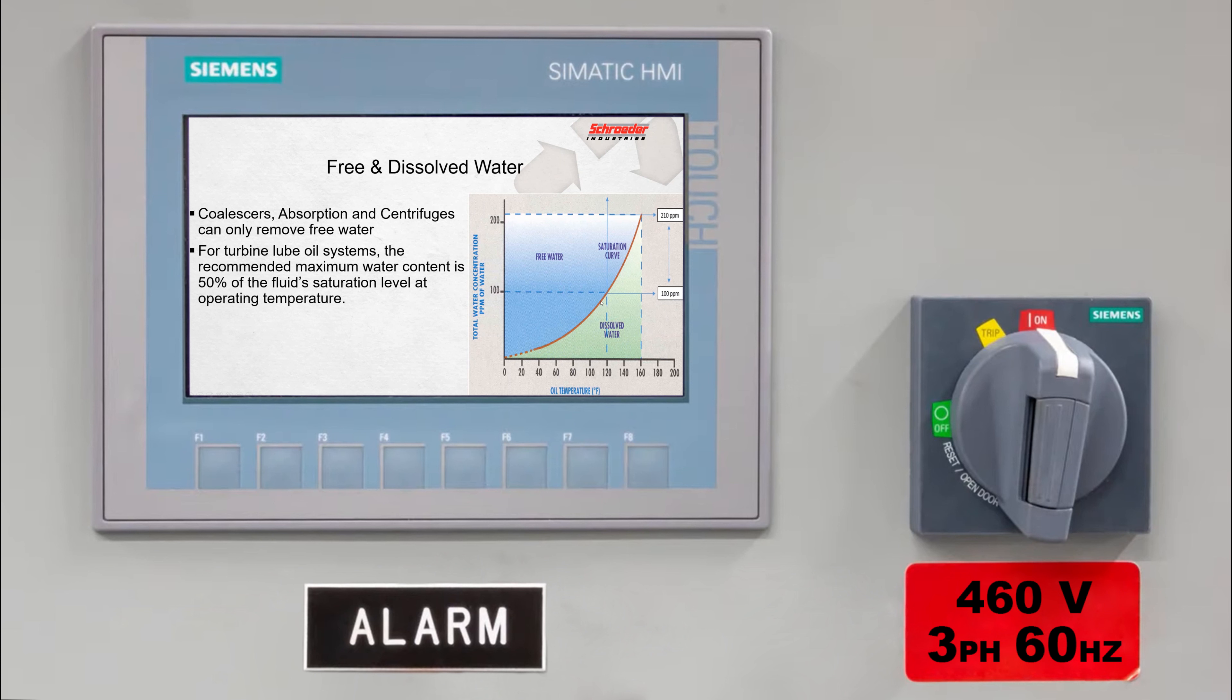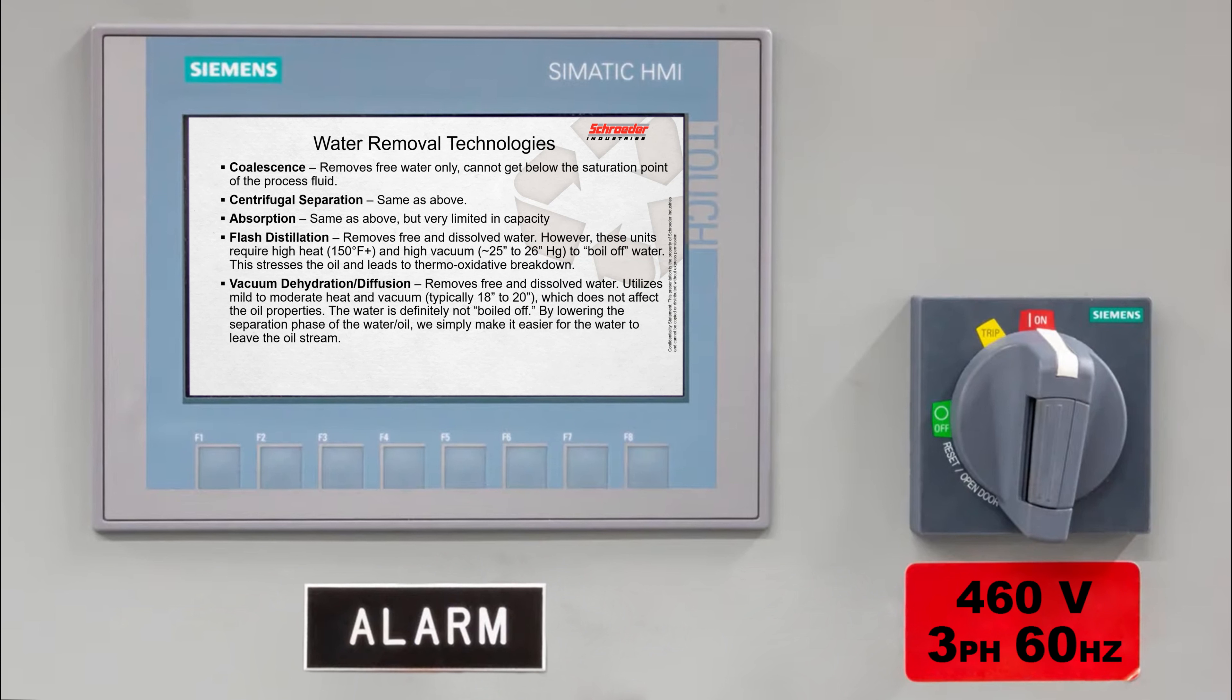The different technologies that are involved for water removal: you got the coalescers, they're going to remove free water only, but they're not going to get it below the saturation point of the fluid. Somewhat cost effective because you don't have to replace them as long as they're kept free of particulate. Centrifugal separation, same as above, very efficient at removing free water, but it's not going to get the absorbed water. Centrifuges do require a tremendous amount of maintenance, power, and they're very expensive. The absorption technology is probably the most cost effective of removing the free water. In a sense it's very cheap, but the elements don't hold a lot of water. You've got to replace a lot of the elements.